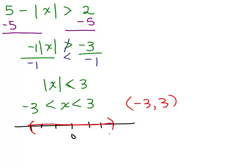You could plug a number in — for example, plug in 2 and make sure that if you plug it in for x, this inequality is going to be true. Or you can plug in negative 2 or negative 1 or any fraction. I'm going to skip the checks because I want to go over the different special cases that come up with absolute value inequalities.